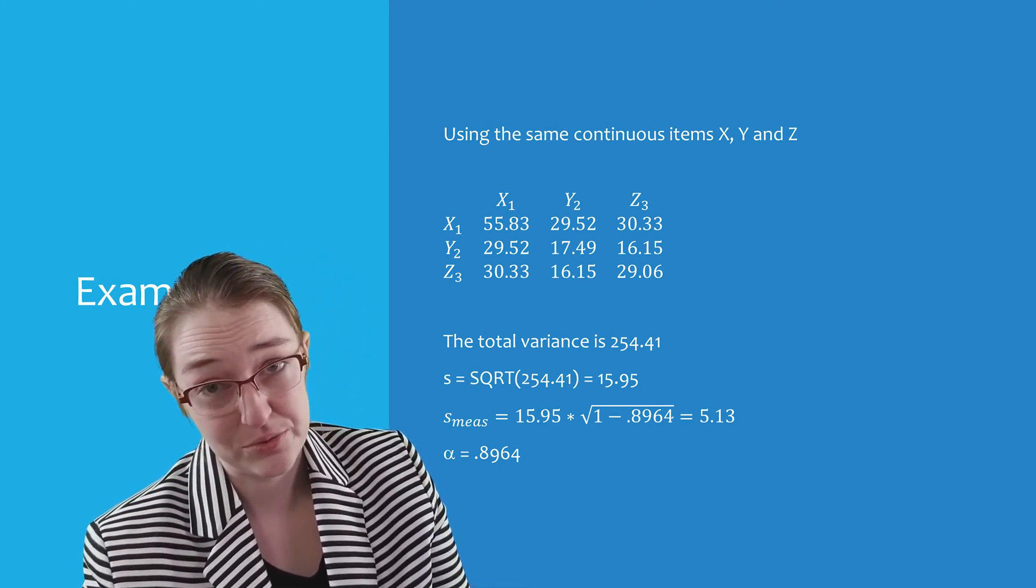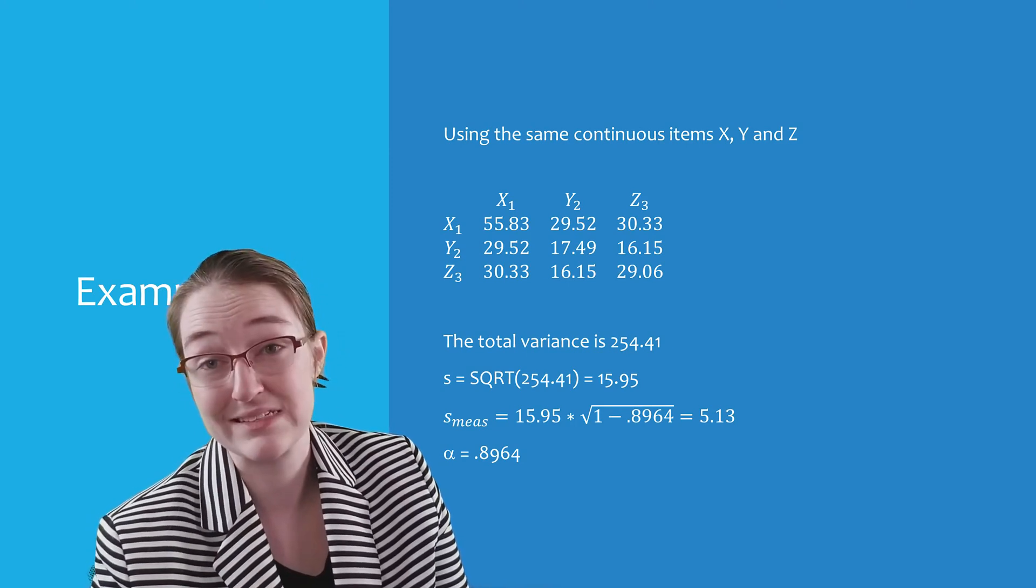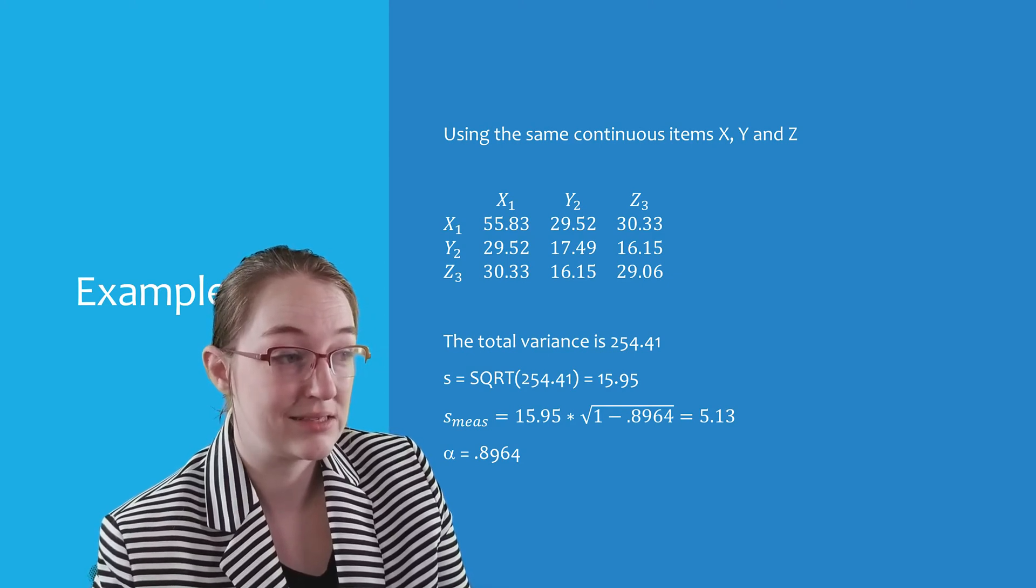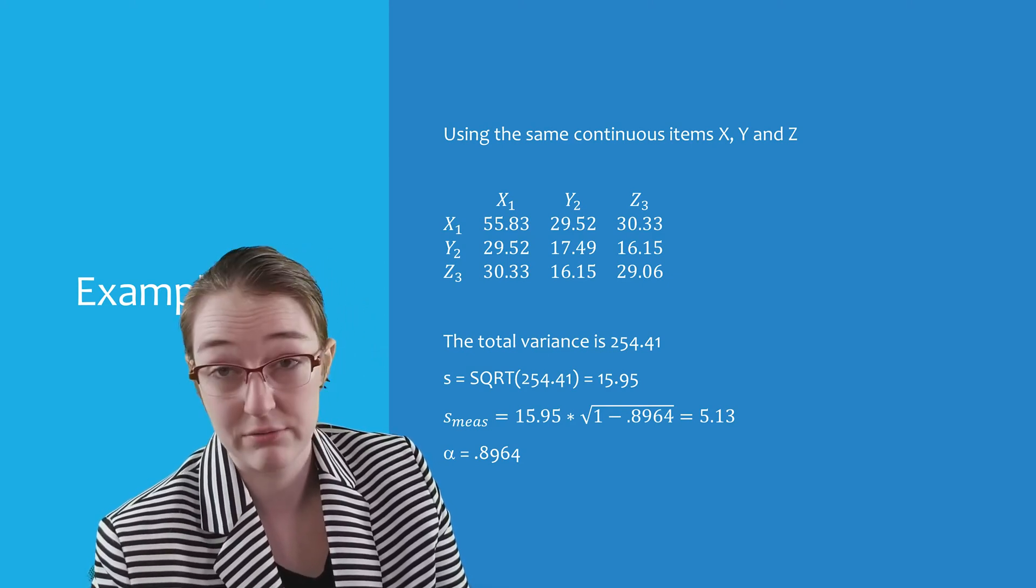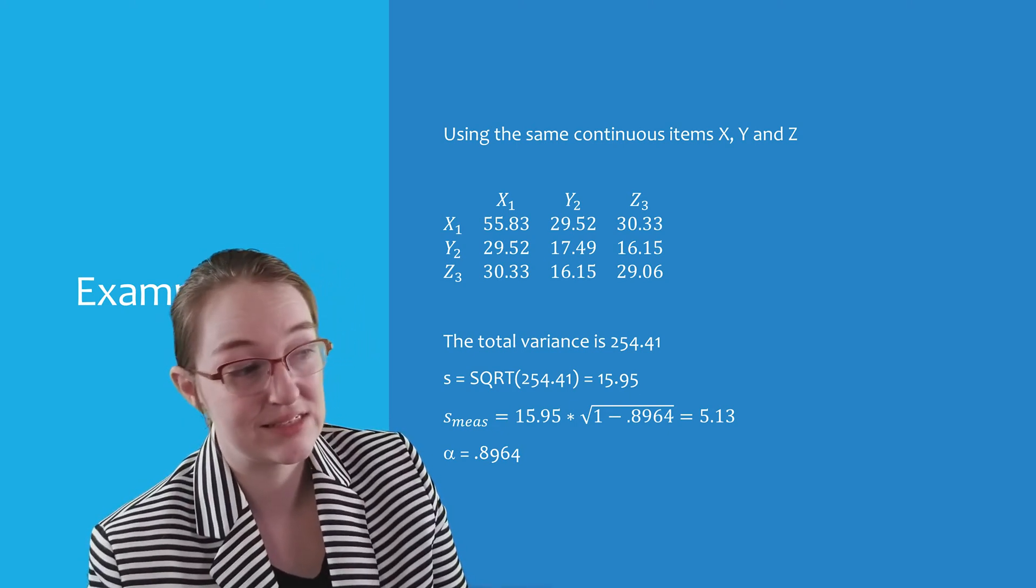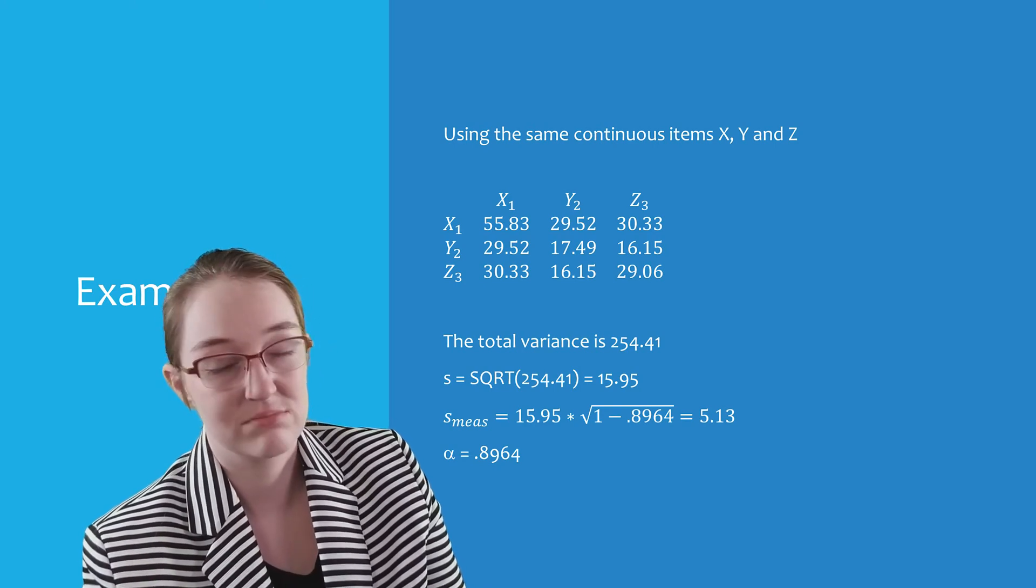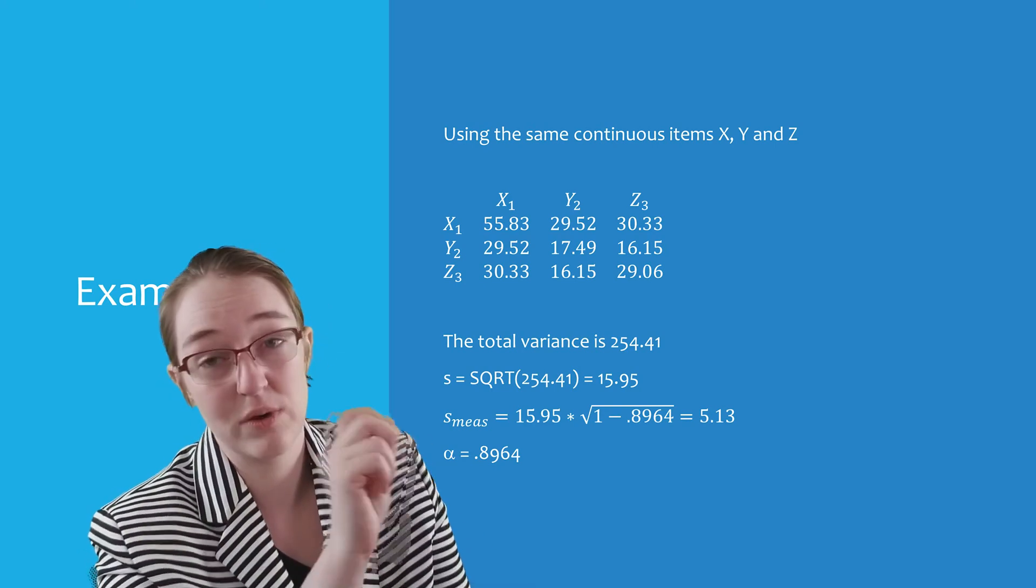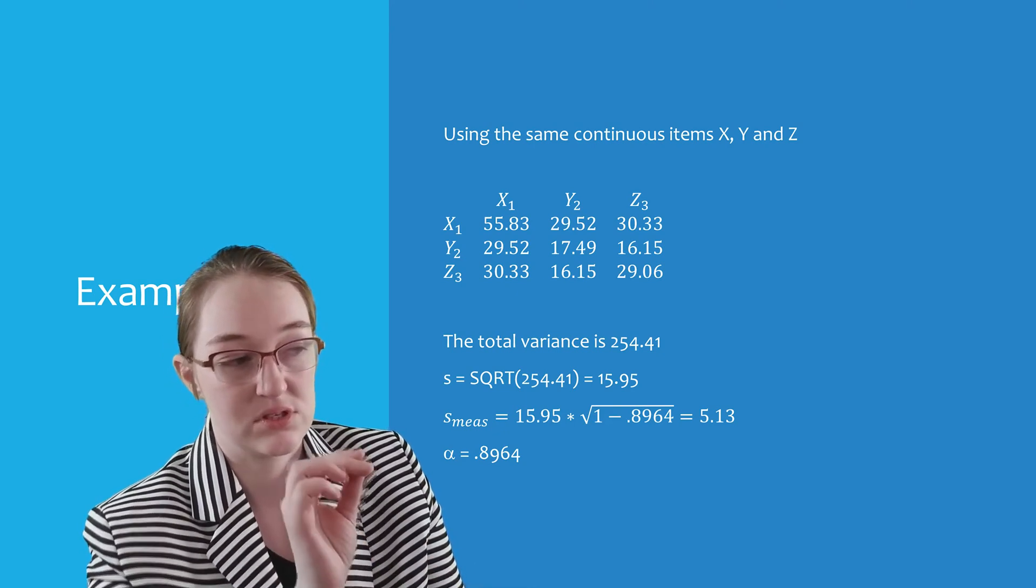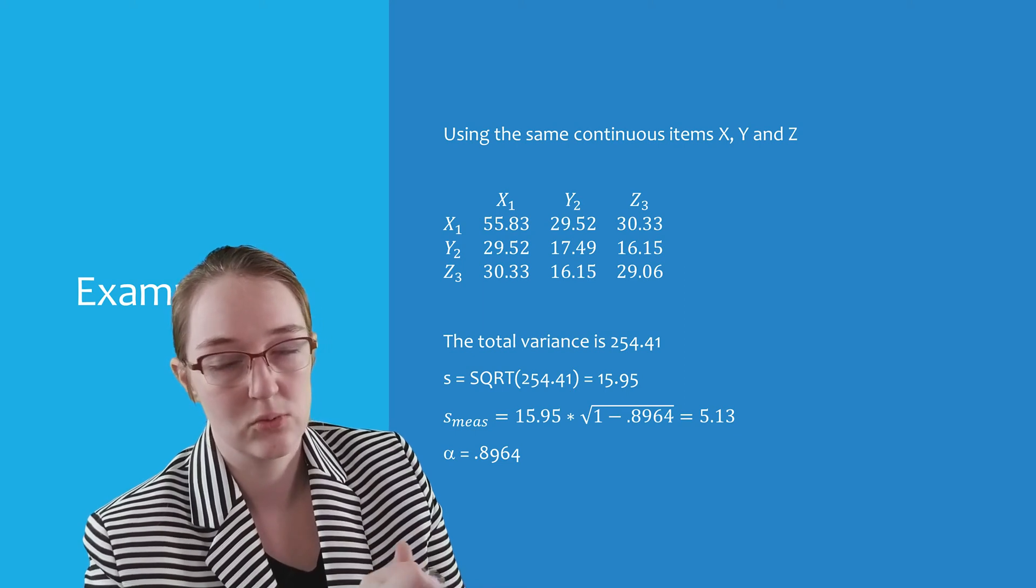And as you may recall, or you can just calculate this yourself, the total variance is 254.41. And we can get the standard deviation of that by taking the square root to get just under 16, which means that our standard error measurement is 16 times the square root of 1 minus our reliability or the square root of just about 0.1.